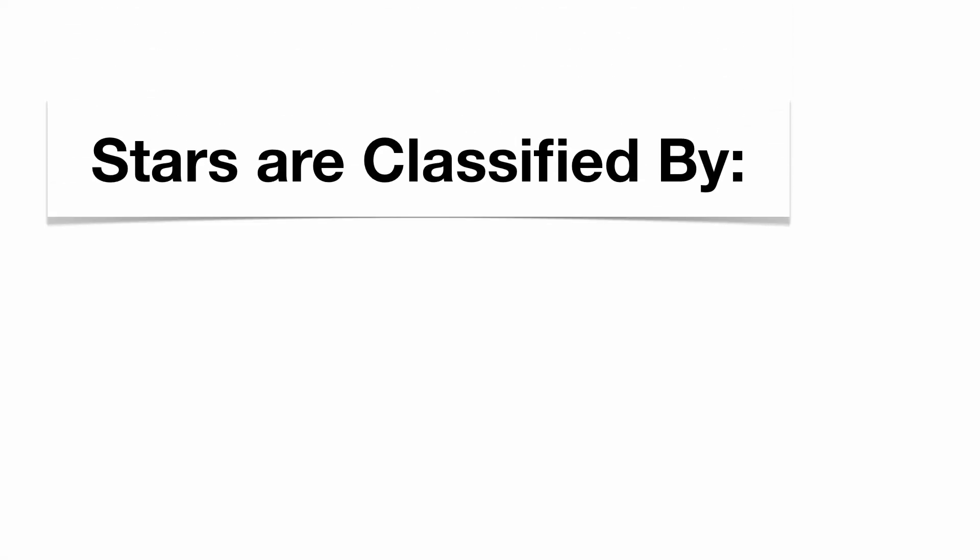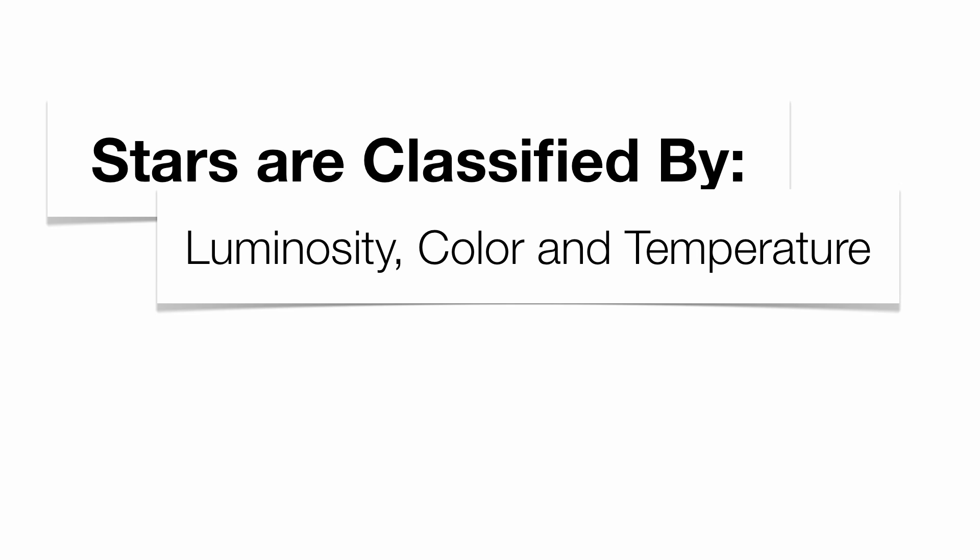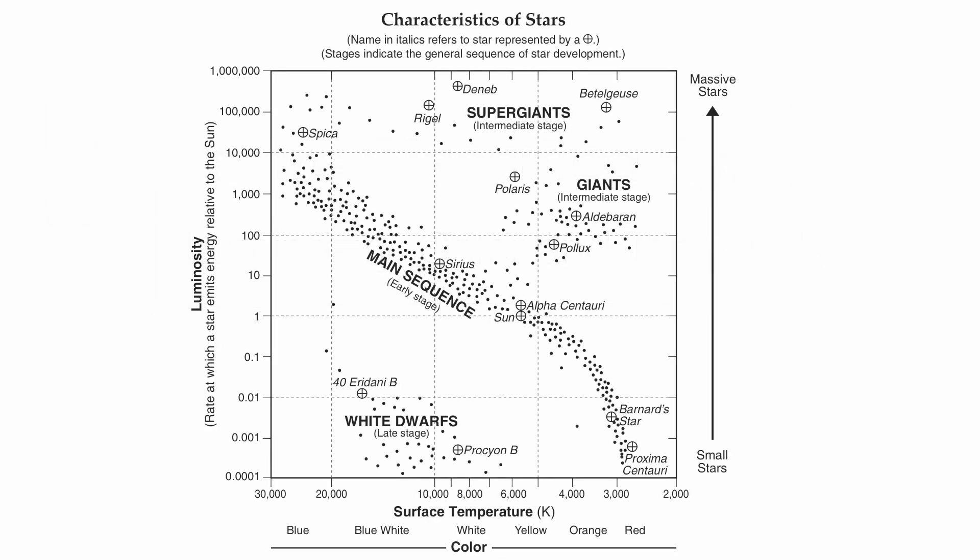Now, our stars can be classified or organized by a number of different topics. Classification just means that something is going to be organized by common characteristics. And the common characteristics include how bright a star is going to be, that's luminosity, its color, and its temperature. Now, those characteristics are going to be found on page 15 in the reference table, the characteristics of stars chart.